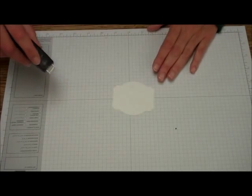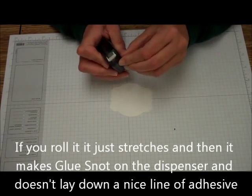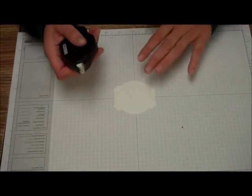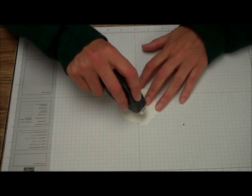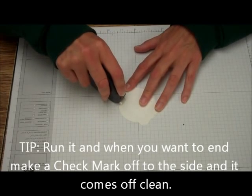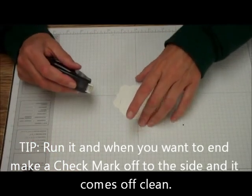But if you just roll it, it just stretches and gets like pulling off snot goobers here. So what you need to do is just run it just like this, and when you get to the end, you lift it and pull like doing a check mark.